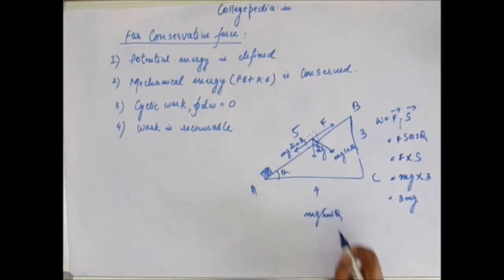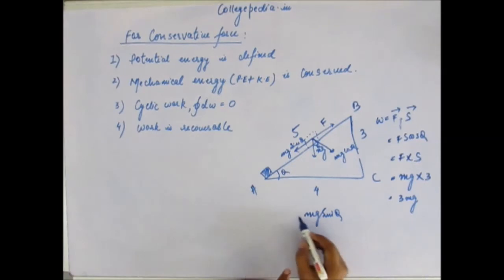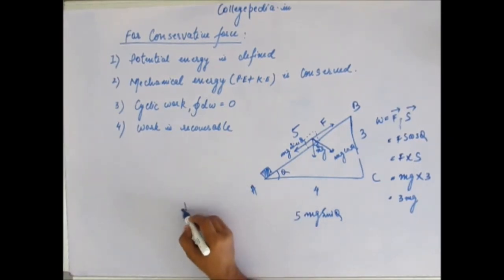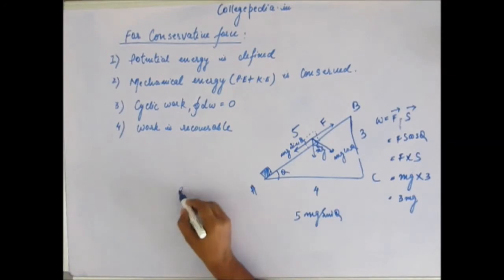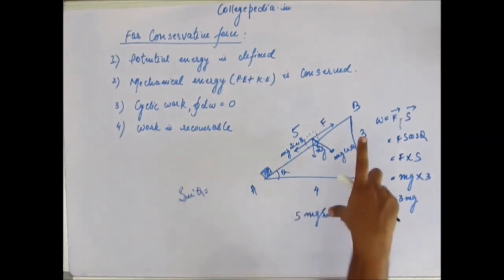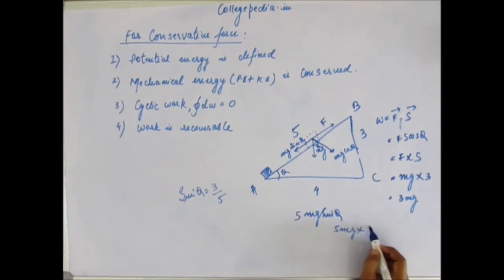So the force that we have to apply is same as mg sin theta, and the displacement that will be brought about is 5. So it is 5mg sin theta. Let's find out what's theta. We can directly calculate sin theta. Sin theta using trigonometry - sin is perpendicular upon hypotenuse - sin theta is 3 by 5. So the work we have to do is 5mg into 3 by 5. That comes out to be 3mg. So this is right.